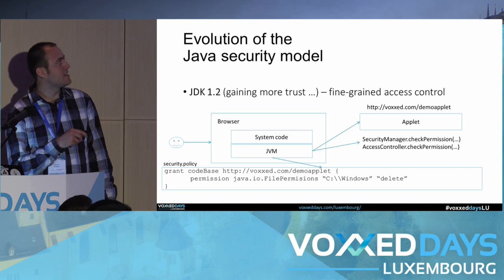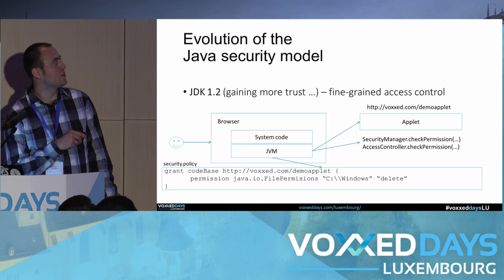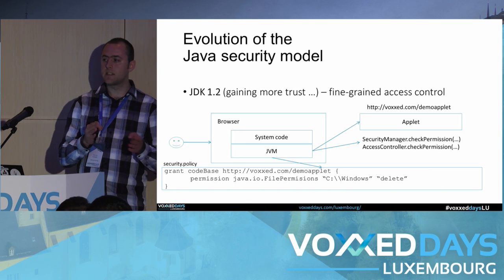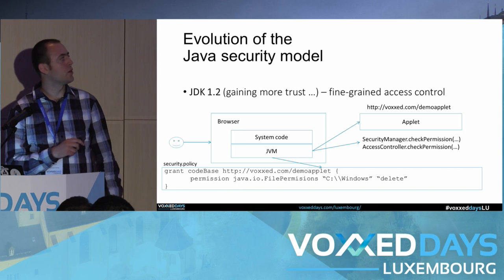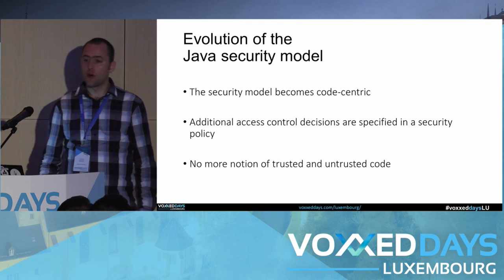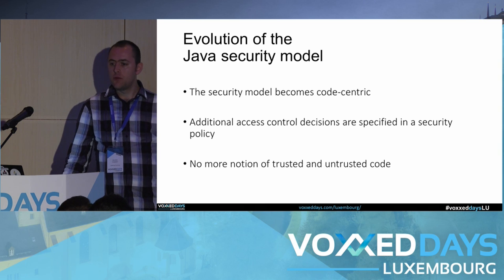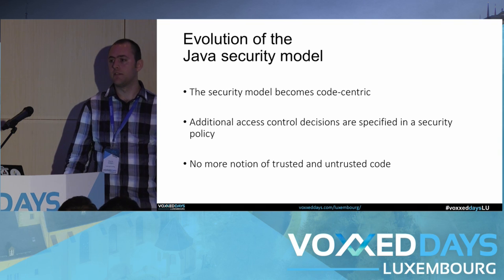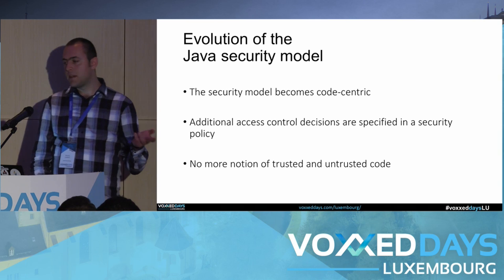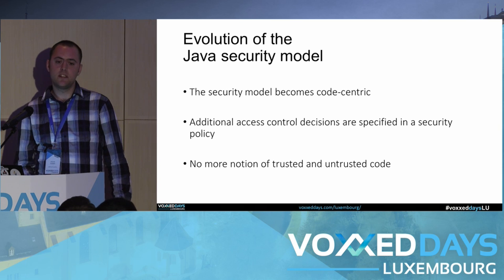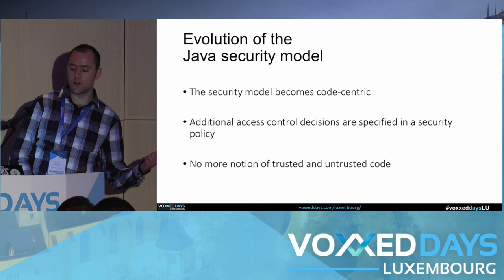A permission entry has three parts: the type of permission — in this case java.io.FilePermission — the target, which is the C:/Windows folder, and the action, which is 'delete'. So as of Java 1.2, the security model becomes more code-centric. You specify which code base — the location from which your applet is loaded — and a particular set of permissions that apply to that location. All security decisions are made in a security.policy file.